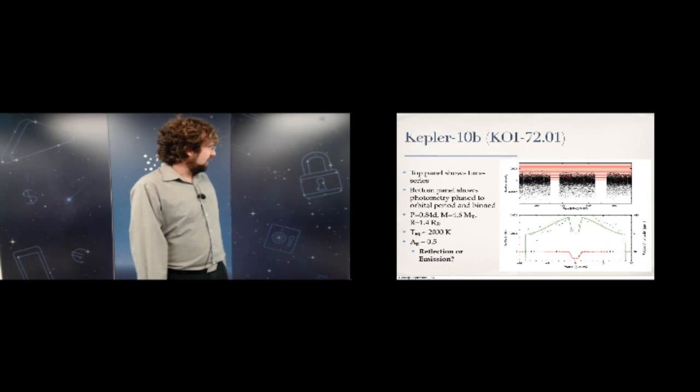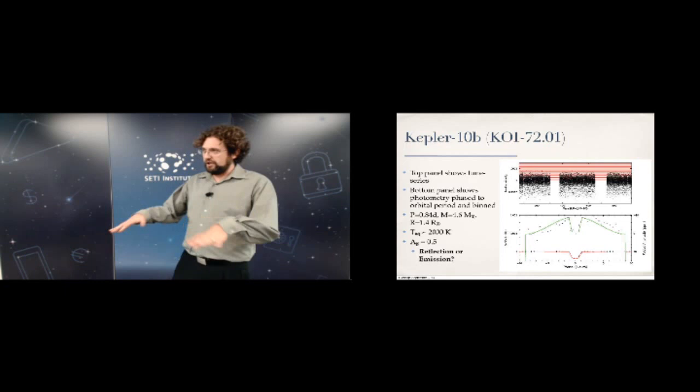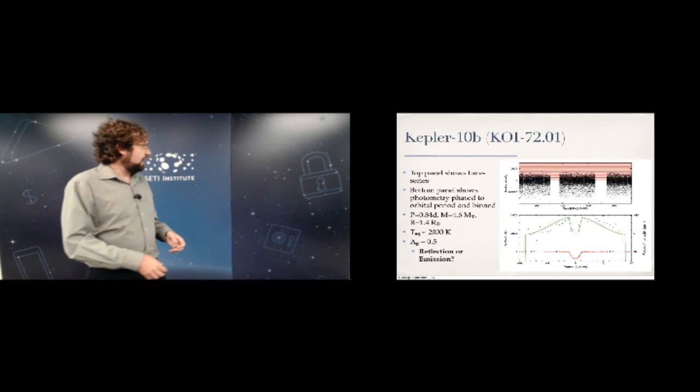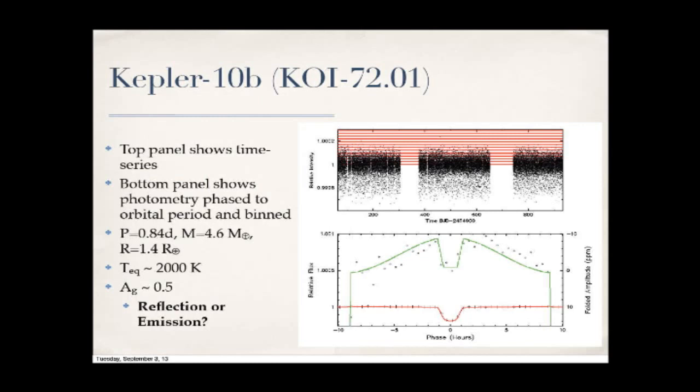The first thing to notice in this part of the light curve: the green line shows what you'd expect from an ideal isotropic reflector, but all the data points on the right side are above the green line. There is a significant asymmetry in this light curve — as the planet goes through its phase changes, one hemisphere appears to be much brighter than the other.